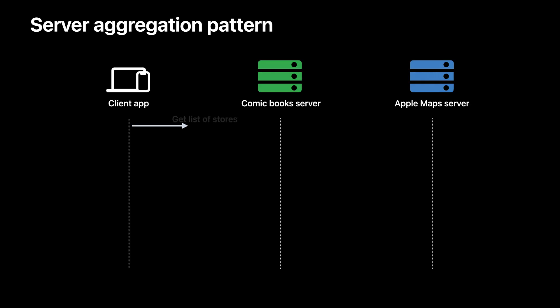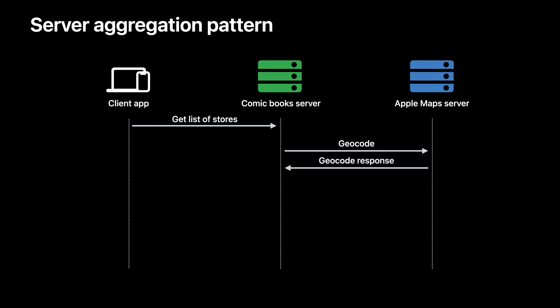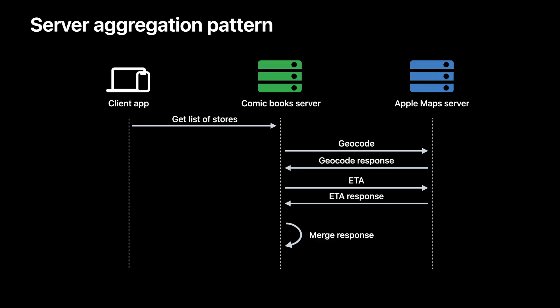Now let's look at a model architecture with access to Apple Maps server APIs. You can start using your backend server as a gateway to reduce chattiness between the client and the services. Just like before, we request a list of stores to be displayed from your client. Next, we make a request from the server to do geocoding. We then receive responses for each API from the Apple Maps server. The comic book server combines the response from each service and sends the response to the application. This pattern can reduce the number of requests that the application makes to backend services and improve application performance over high latency networks. In summary, your client makes one call to your server to get the list of stores, and your server does the heavy lifting to make appropriate API calls to compose a response more suited for your user.